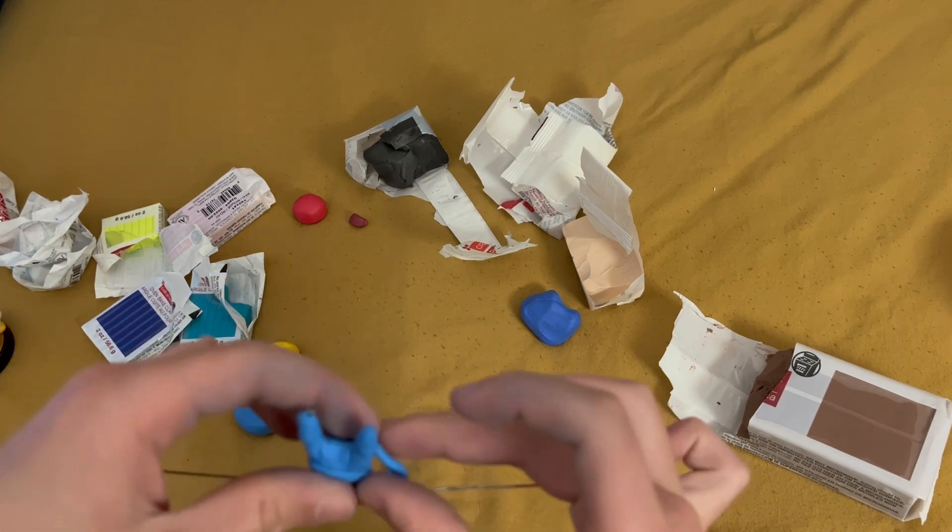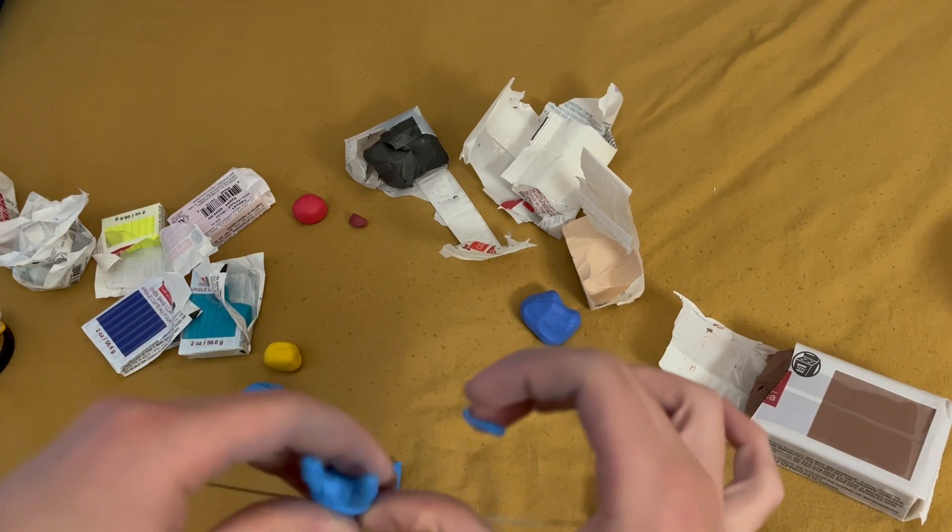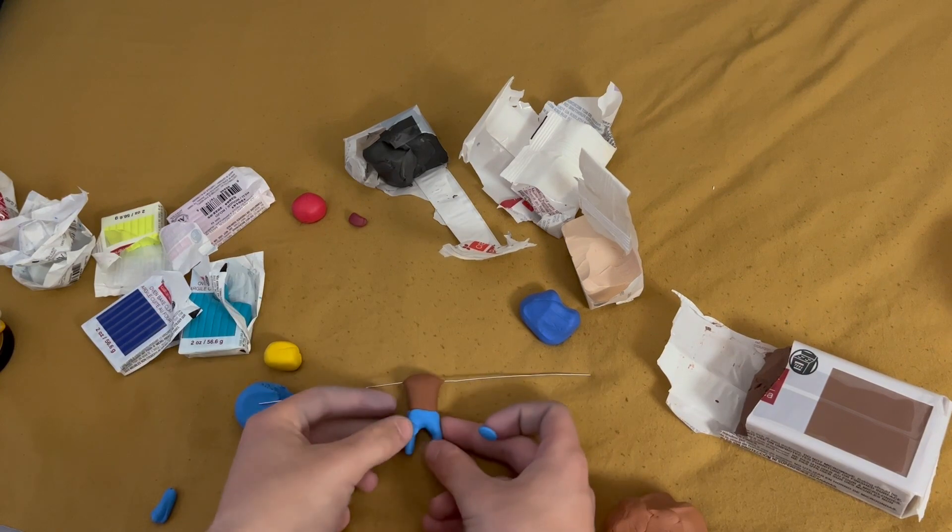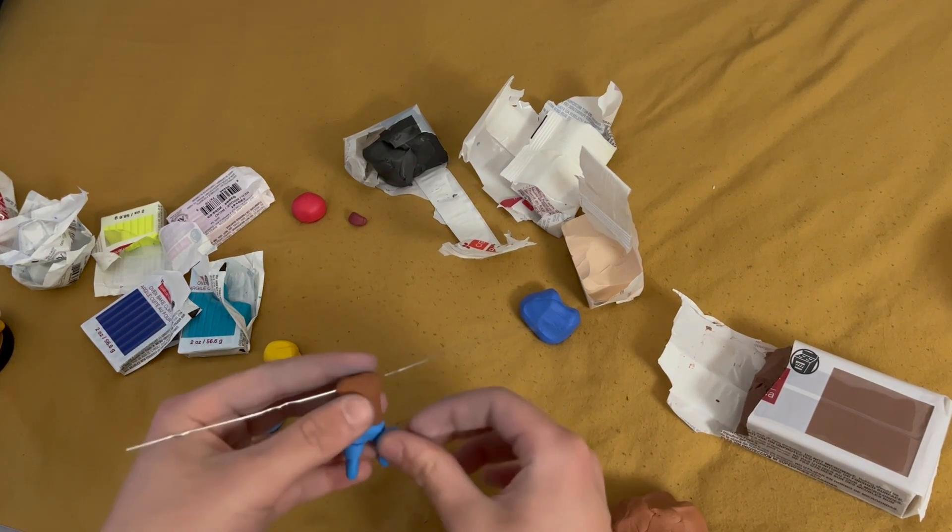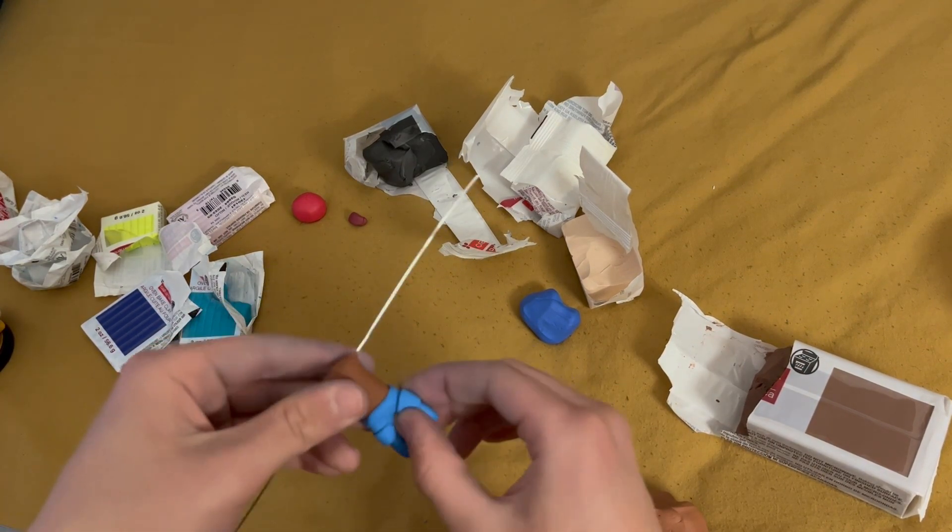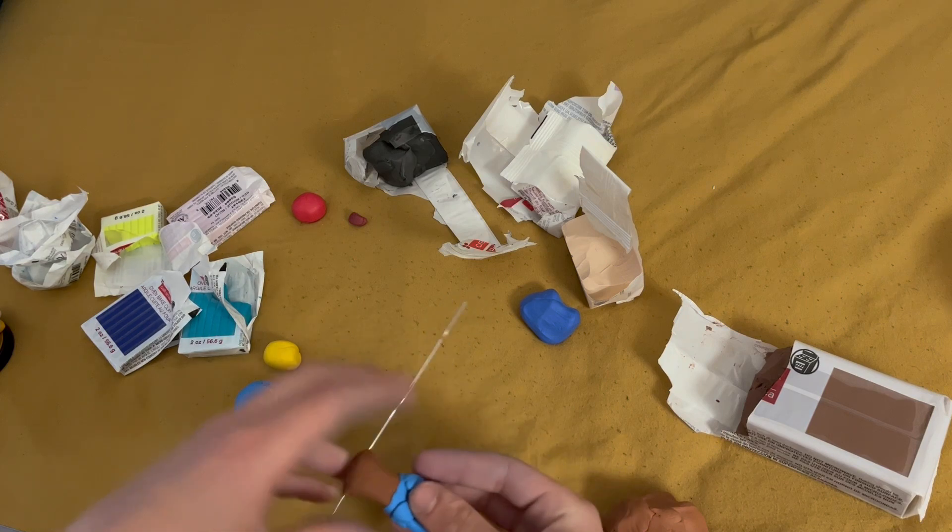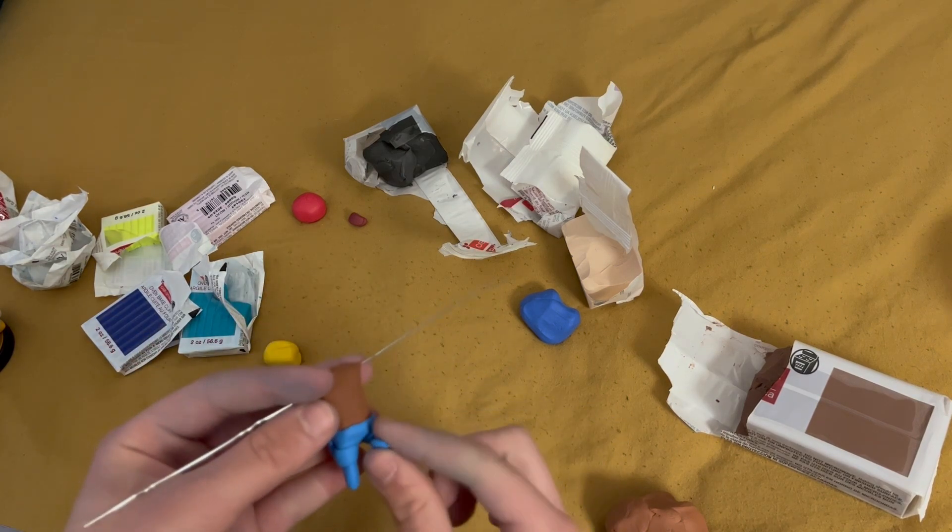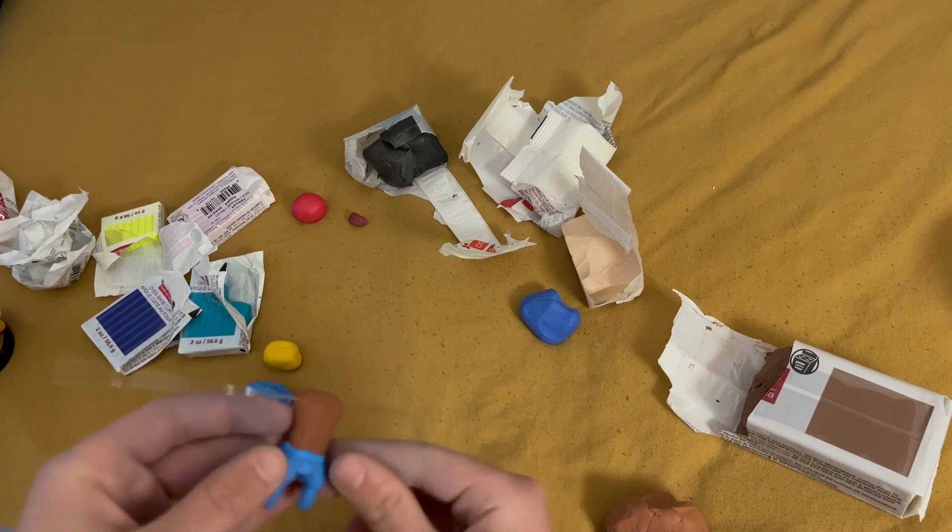Once this is blended in, I put a worm fully around the top part of the legs to make an obvious seam between the legs and the body. Once this is done, I start adding slight amounts of clay to bulk up some areas like the thighs and the waist area.